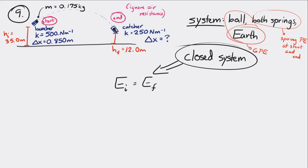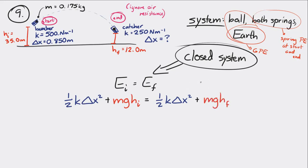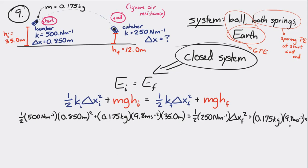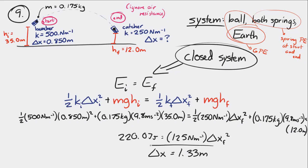At the beginning it has spring potential energy and gravitational potential energy. At the end it also has spring potential energy and gravitational potential energy. We put in all the information we know — the only unknown is the final compression of the spring, delta xf. Solving for the final compression of the spring: 1.33 meters.